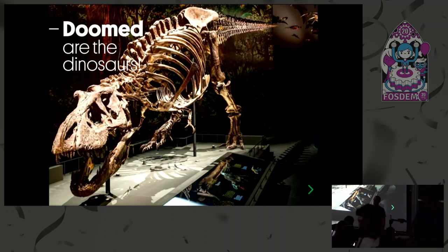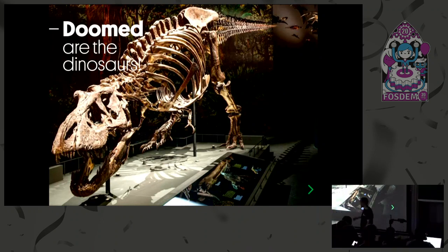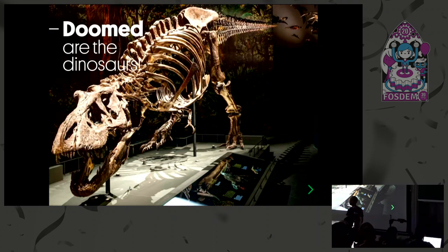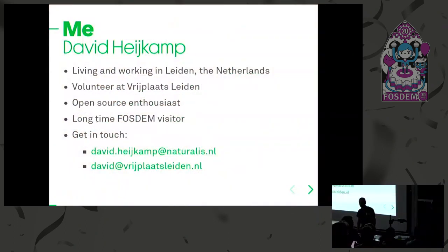This talk is about something entirely different — about dinosaurs. Let's start with an introduction. You can see Trix, which is an actual T-Rex that lived about 66 million years ago, and she is now one of the main attractions in our Natural History Museum in Leiden.